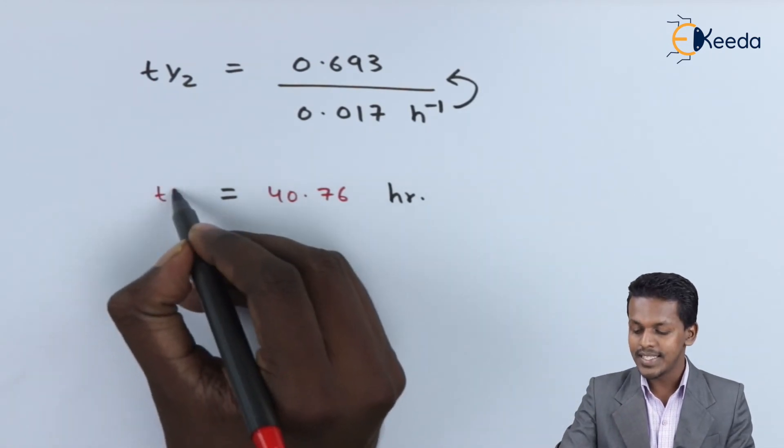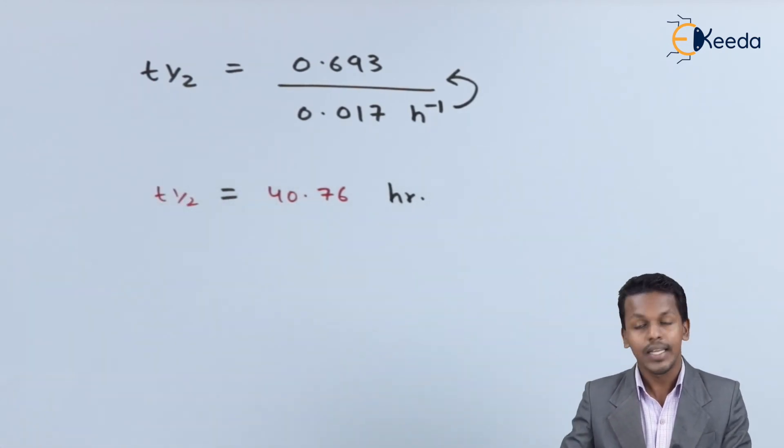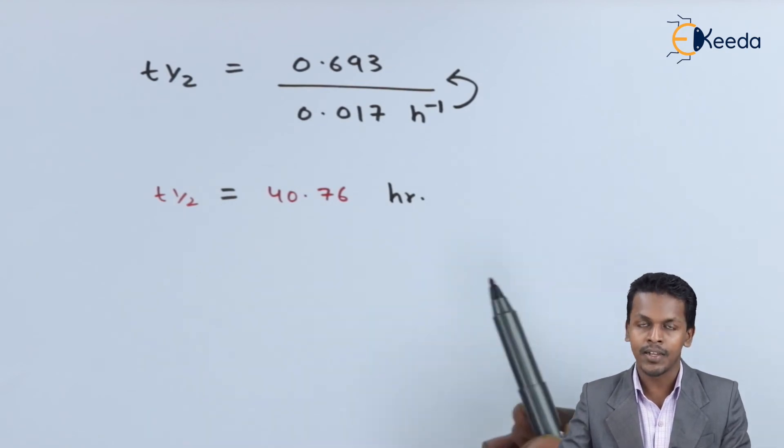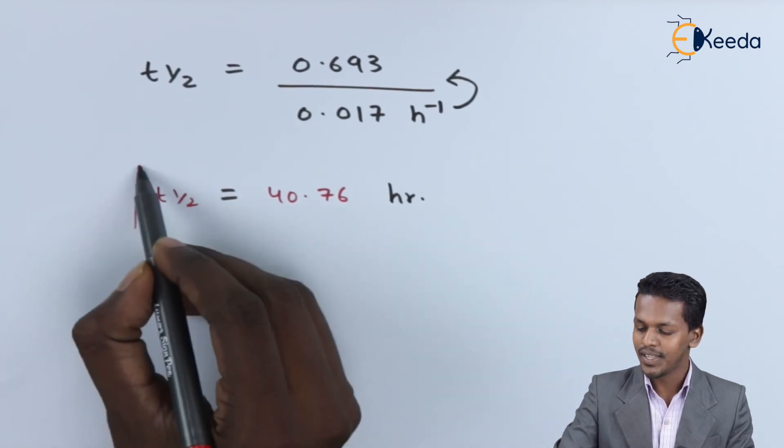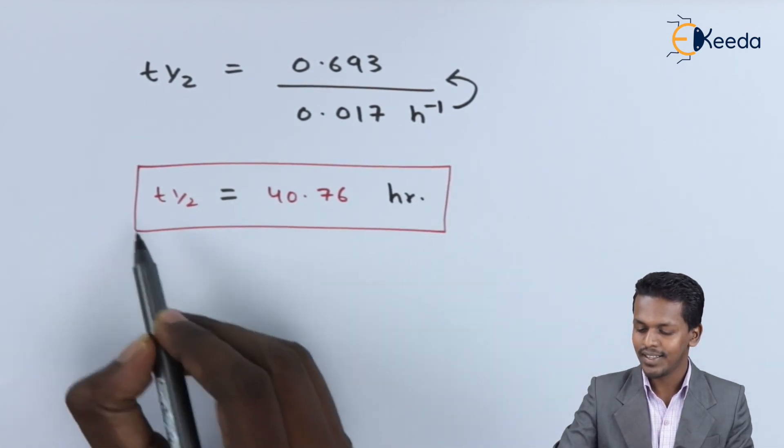Since they have not mentioned whether we need to find half-life in hours, minutes, or seconds, we'll keep the value as it is. So this is the half-life that we have got. That's it, so simple.